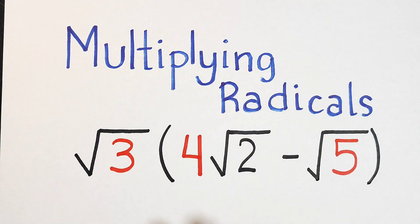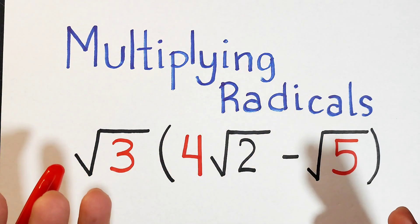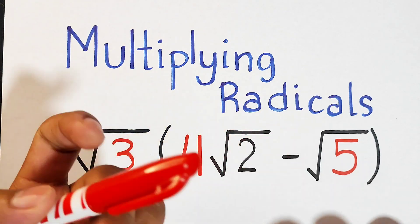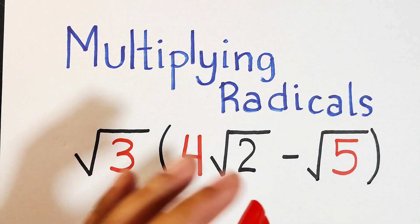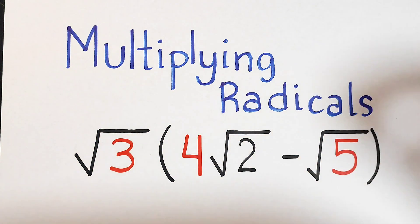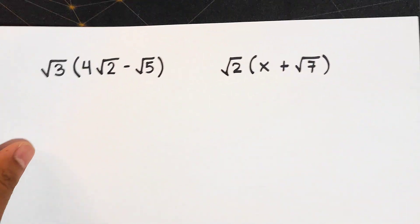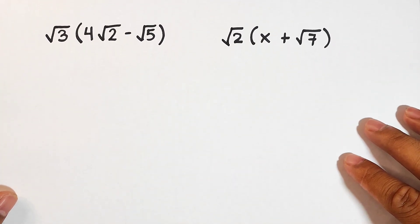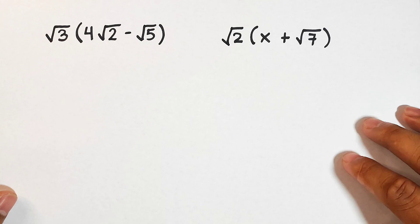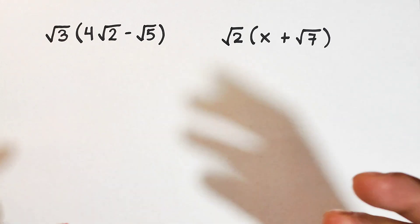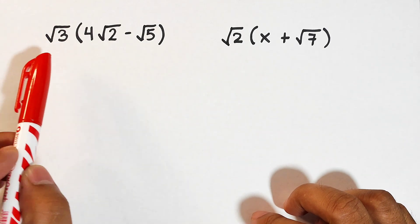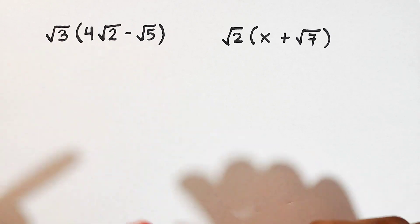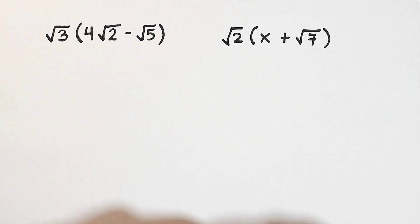Hi guys, it's me Teacher Going. In today's video we will talk about multiplying radicals. What we have here are two examples for us to discuss how to multiply radicals. This one is an example where we will multiply a monomial and a binomial. So let's get started.